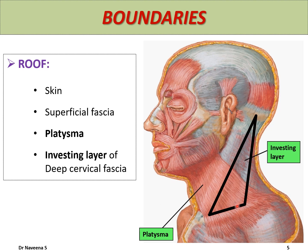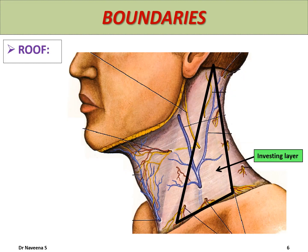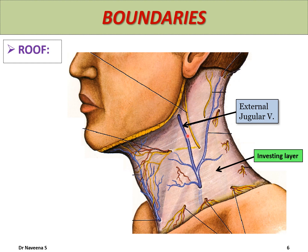The part of the investing layer forming the roof of the posterior triangle is related to or pierced by a few superficial or cutaneous structures. These include the external jugular vein, which runs obliquely downwards and backwards across the sternocleidomastoid muscle, lying deep to the platysma. On the roof of the posterior triangle, it pierces the investing layer 2.5 cm above the clavicle. On the roof, it receives a major tributary known as the posterior external jugular vein, which opens into it just below its midpoint. The cutaneous nerves pierce the investing layer, run in the superficial fascia, and become cutaneous.